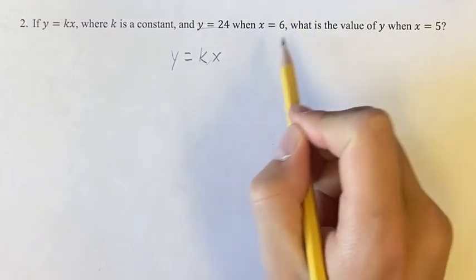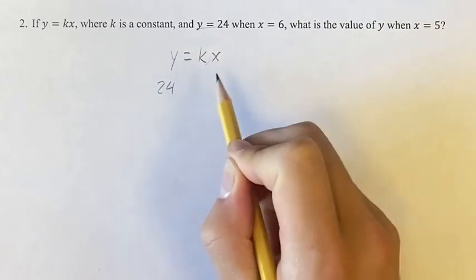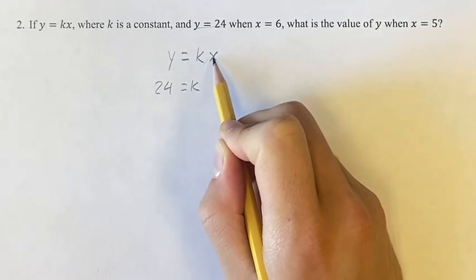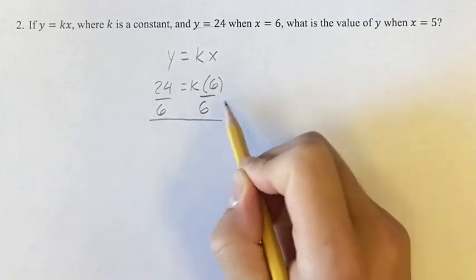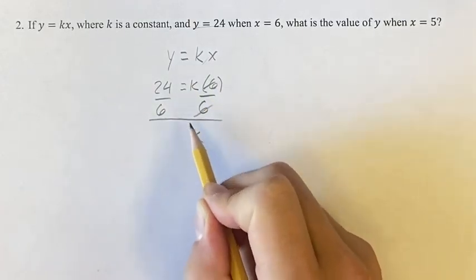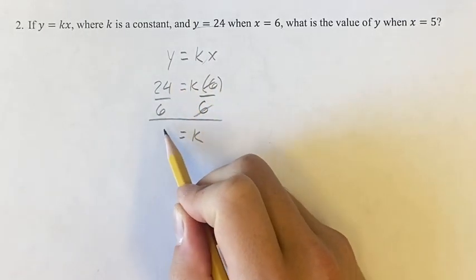So we're going to do that given that y is equal to 24, so plugging in 24, is equal to k times x when x is equal to 6. Dividing both sides by 6, we get that k is equal to 24 over 6, which is 4.